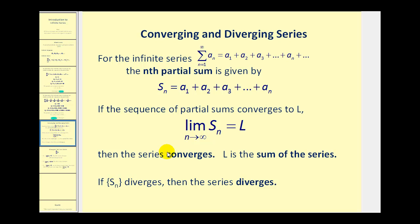Let's take a look at a more formal definition of converging and diverging series. For an infinite series, the nth partial sum is given by s sub n, which equals a sub 1 plus a sub 2 all the way to a sub n. If the sequence of the partial sums converges to L — meaning the limit as n approaches infinity of s sub n equals L — then the series converges, and L is the sum of the infinite series. If s sub n diverges, then the series diverges.